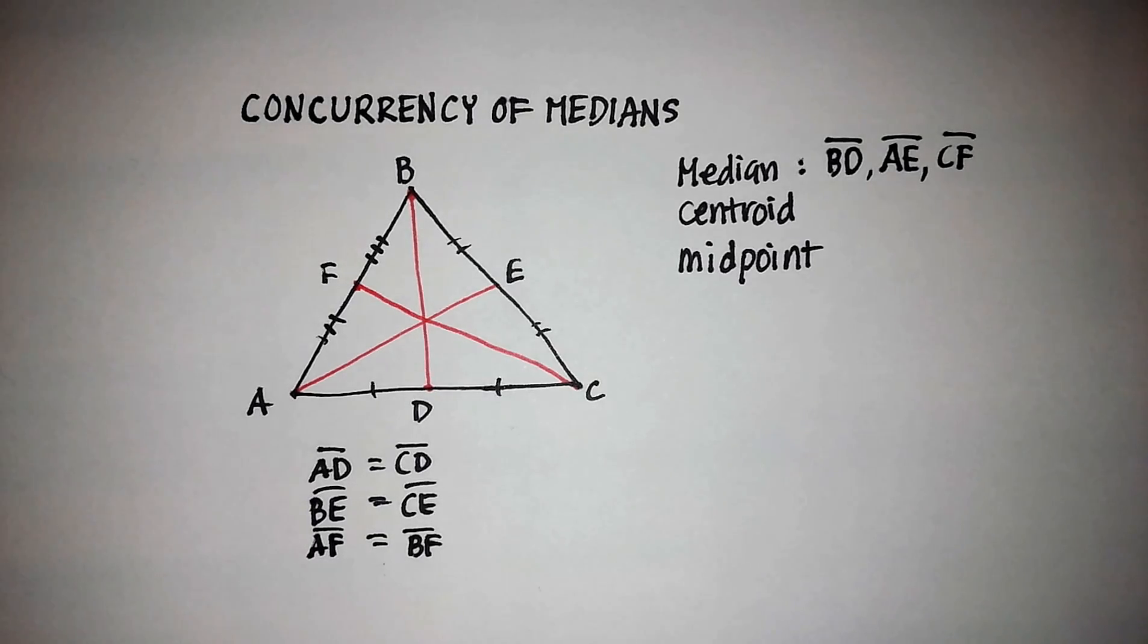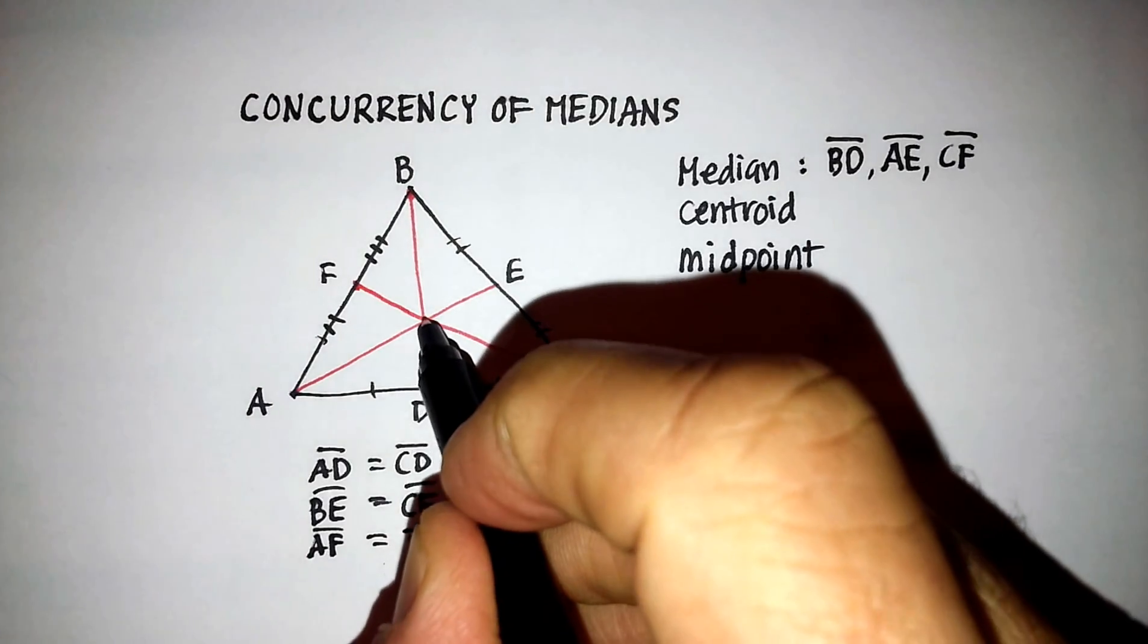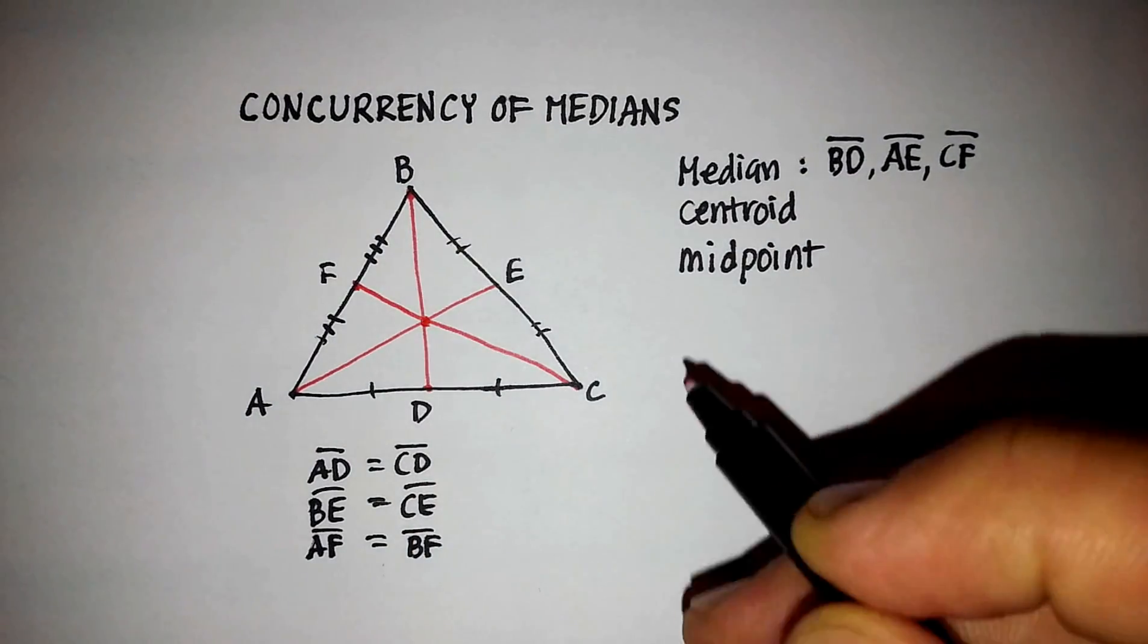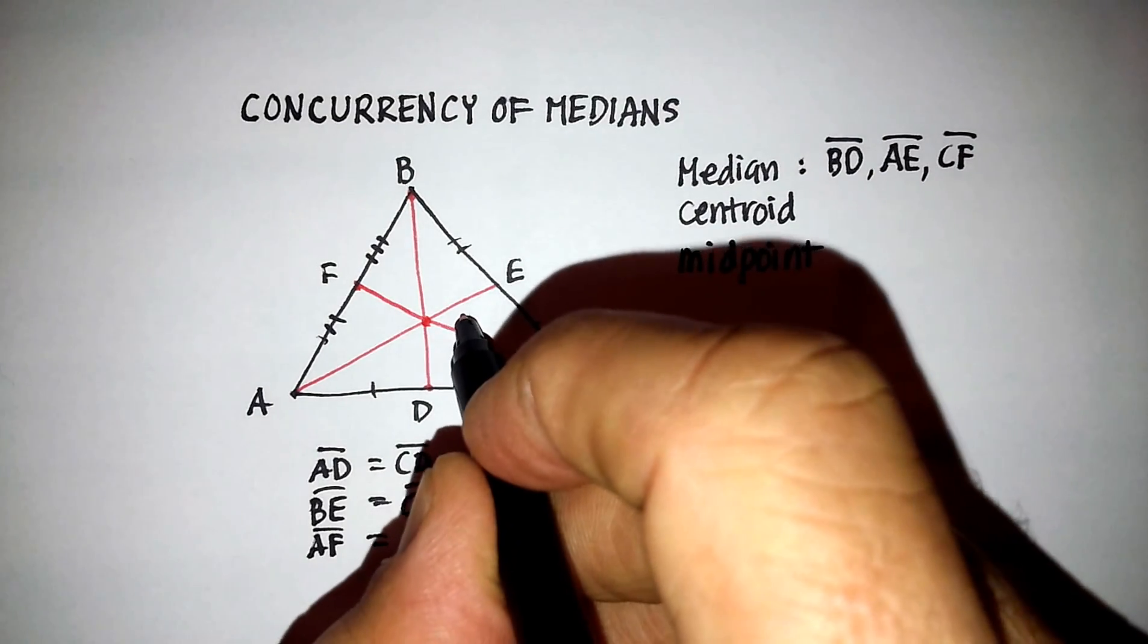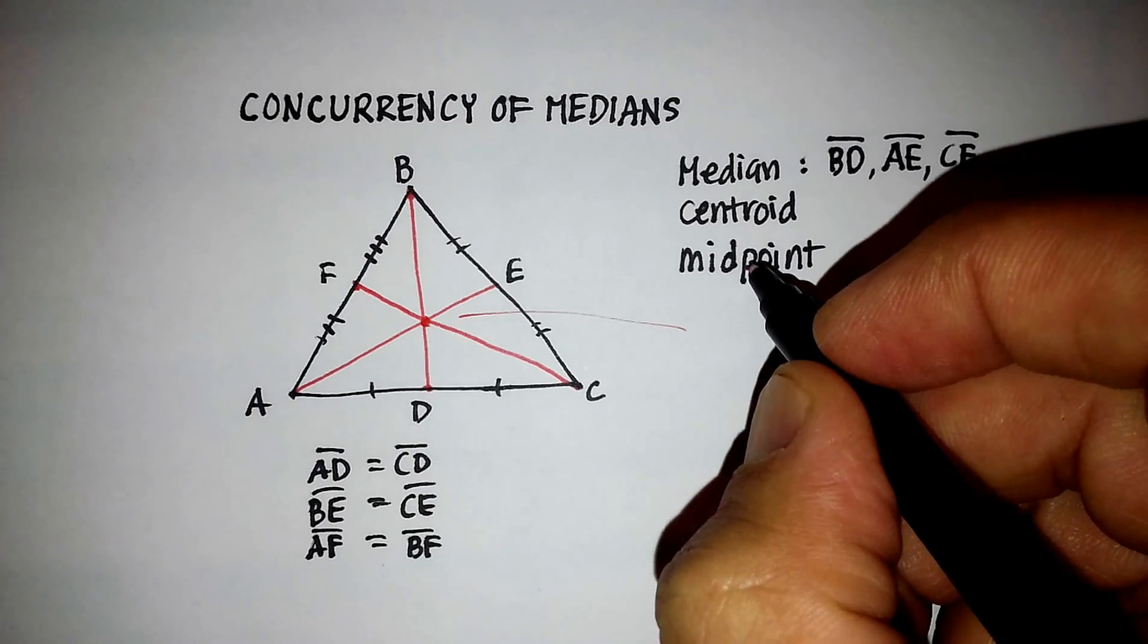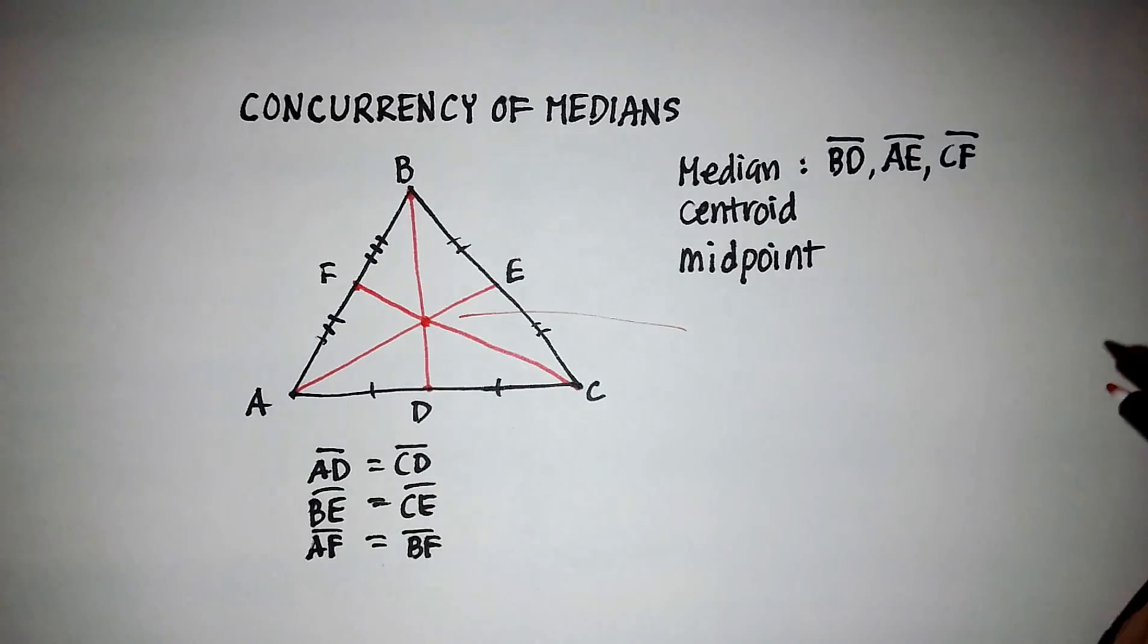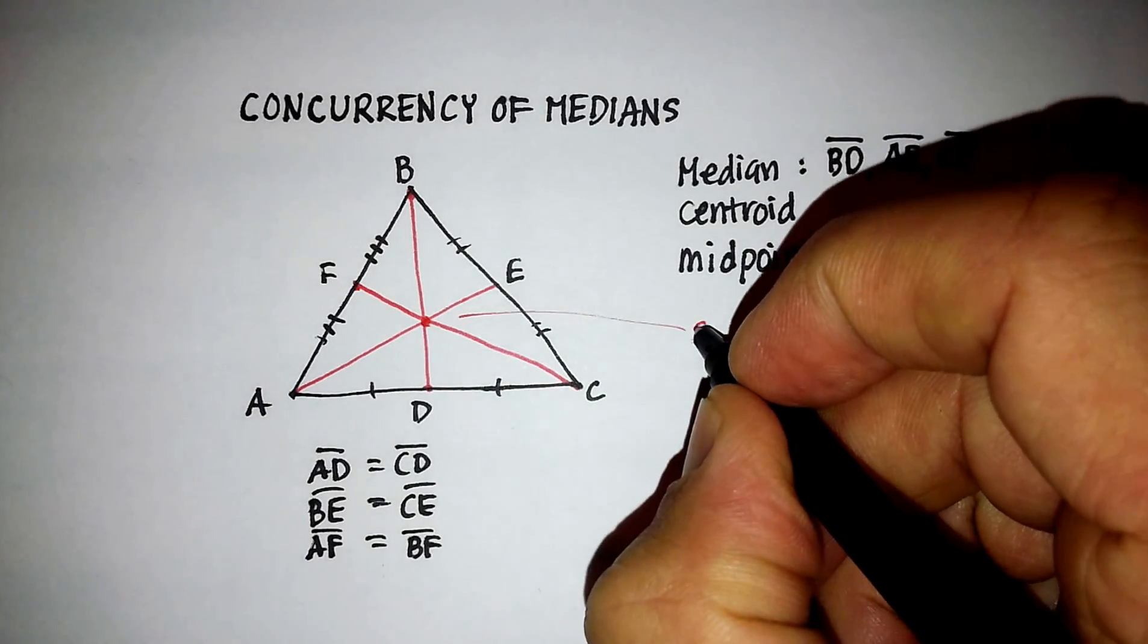So we've got three medians. And you'll notice that the three medians come together in one point. And that point is our second definition. And actually, our third definition, right? Because we already talked about what the midpoint is. It's halfway between the two lines. But that point is called the centroid.